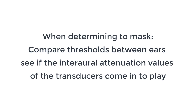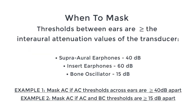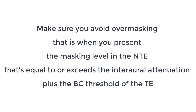When determining to mask, you want to compare the thresholds between ears and see if the interaural attenuation values of the transducers come into play. You want to make sure you avoid over-masking, which is when you present the masking level in the non-test ear that is equal to or exceeds the interaural attenuation plus the bone conduction threshold of the test ear.